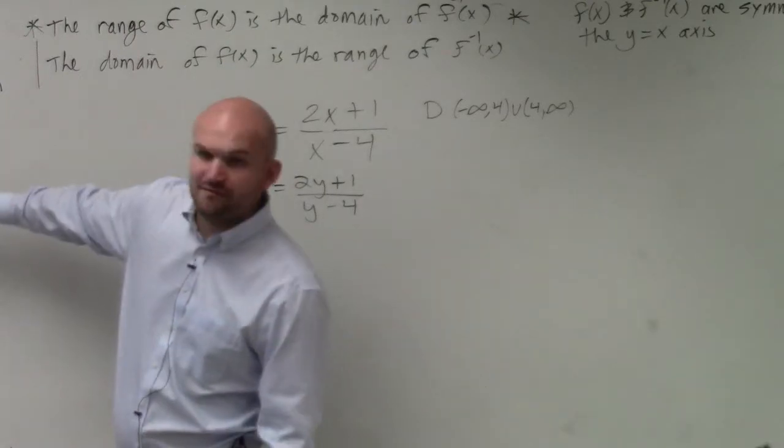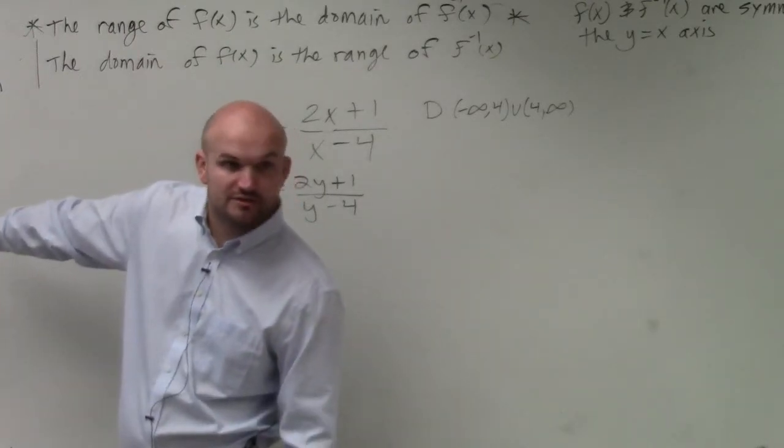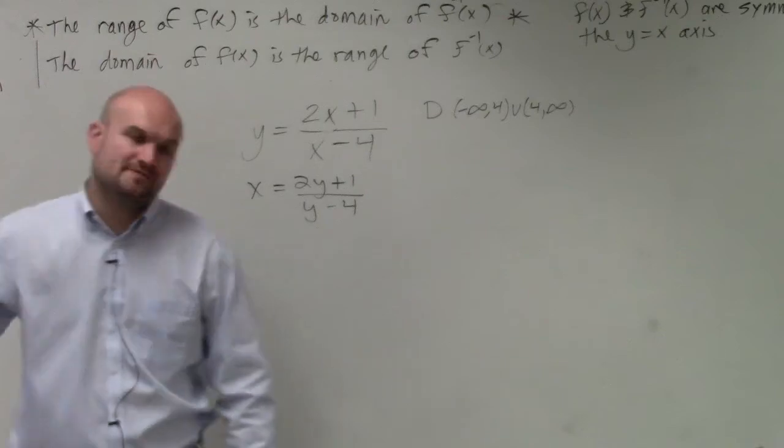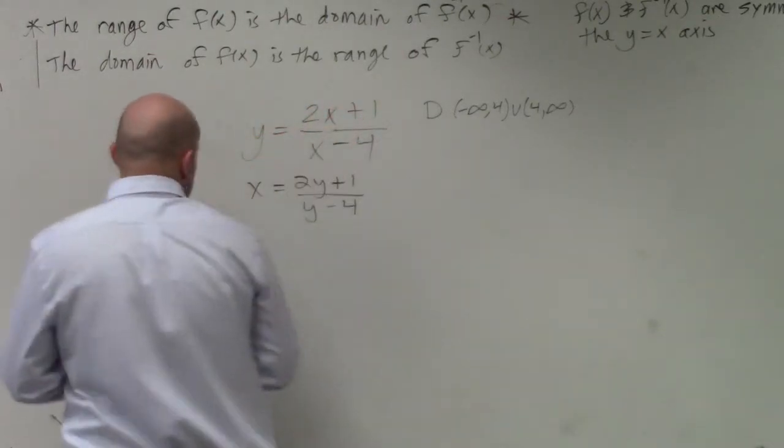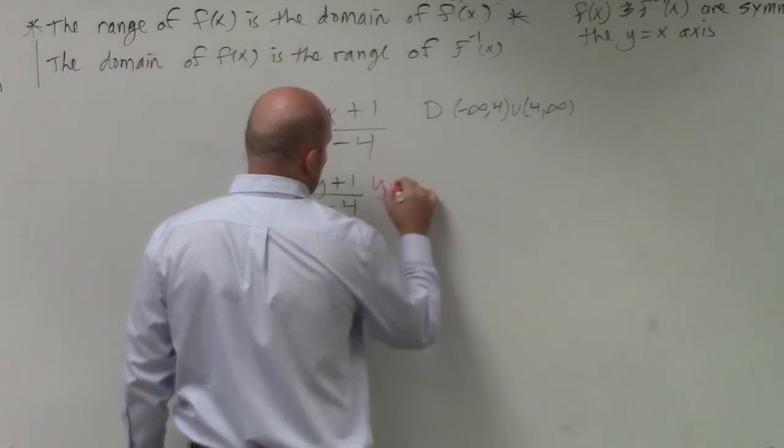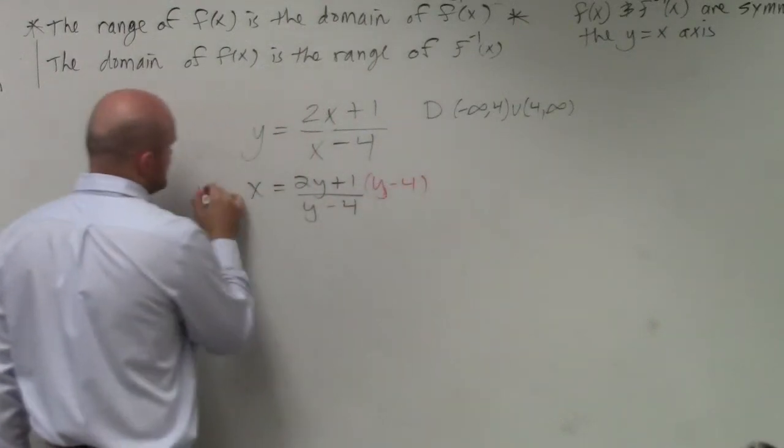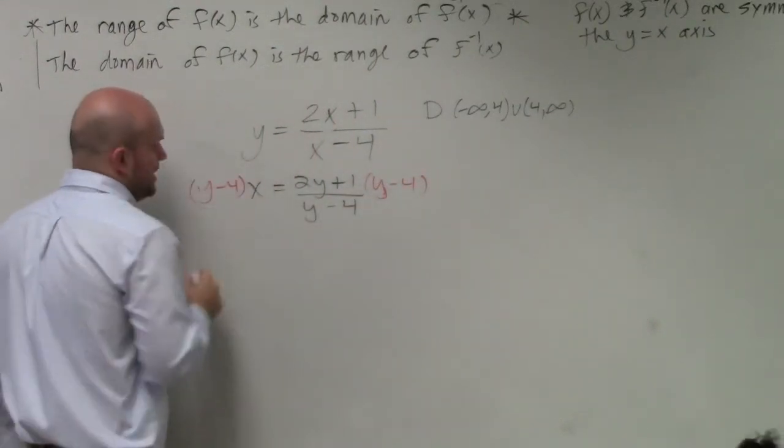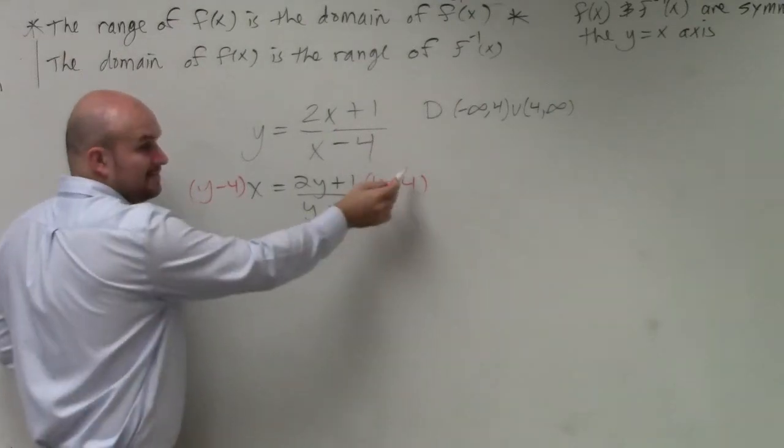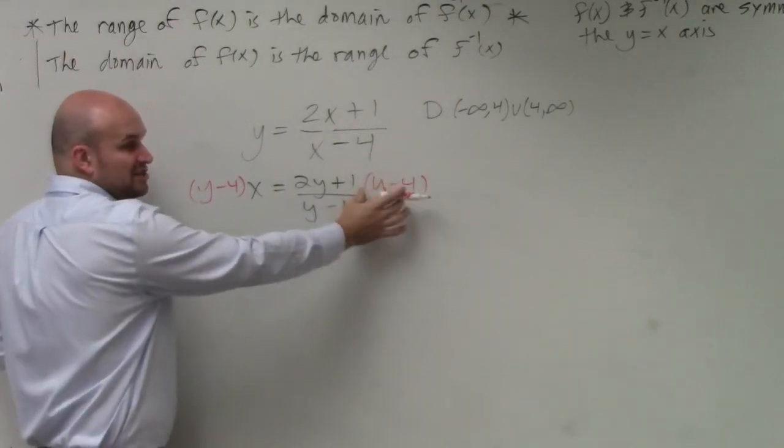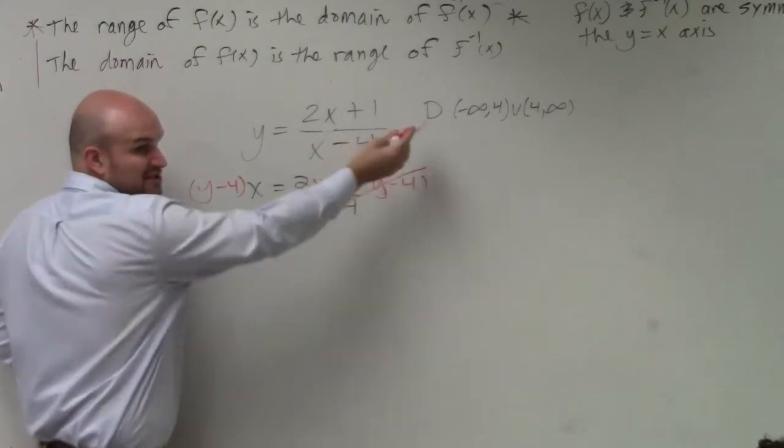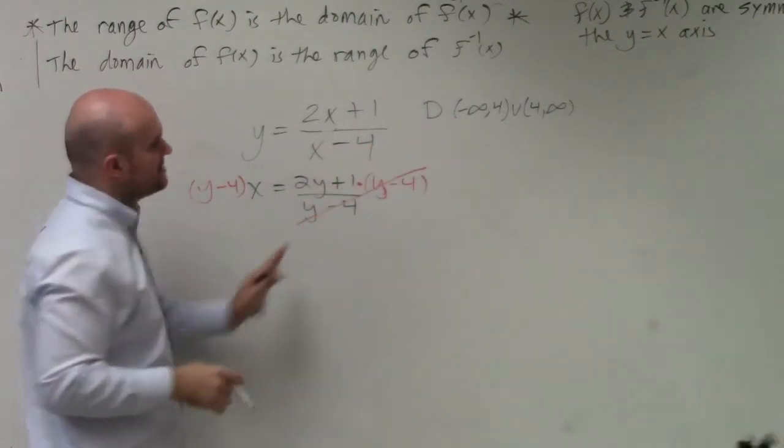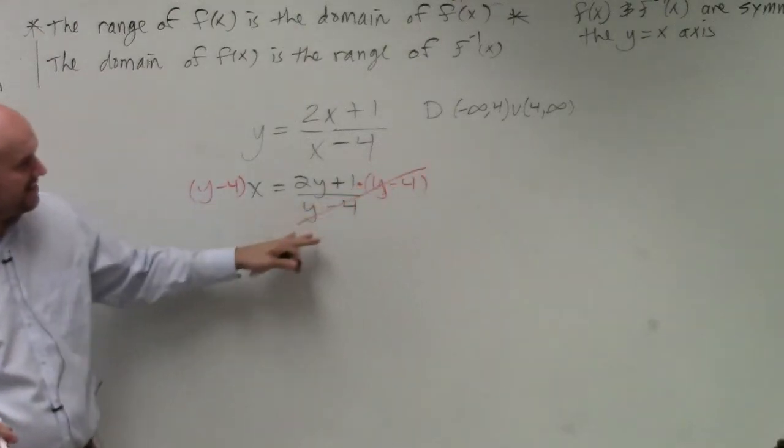Again, as I mentioned, whenever you have a variable in the denominator, first thing you should always be doing is get that variable off the denominator. So therefore, what I'm going to want to do is multiply by y minus 4 on both sides. Any time you have the same expression in the numerator and the denominator when these are separated by multiplication, that's why I can divide them out. Since they're separated by multiplication, I divide them out.